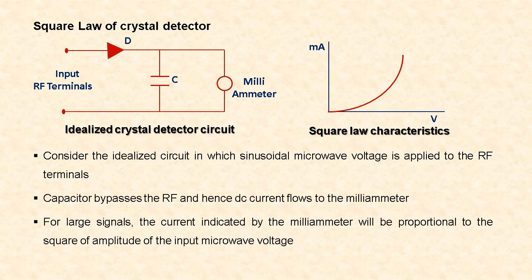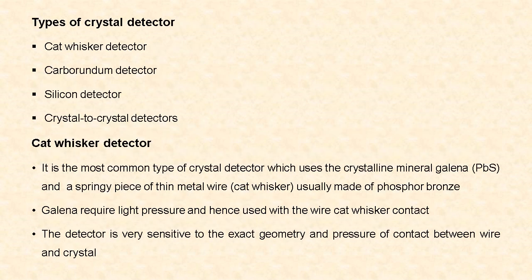The current indicated by the milliammeter is proportional to the square of the amplitude of the input microwave voltage. The types of crystal detector based on the type of crystal used are: cat whisker detector, carborundum detector, silicon detector, and crystal-to-crystal detectors.